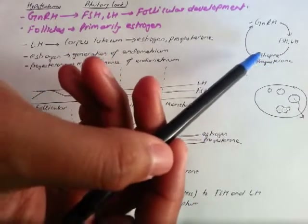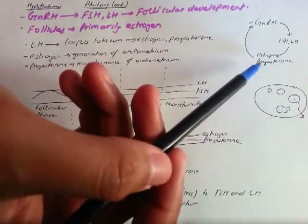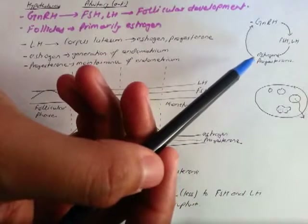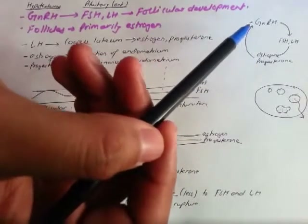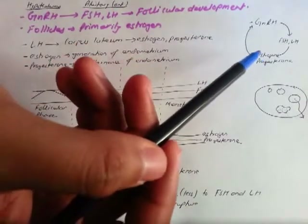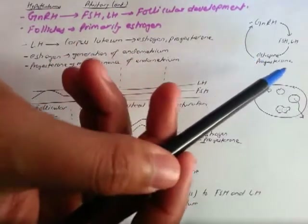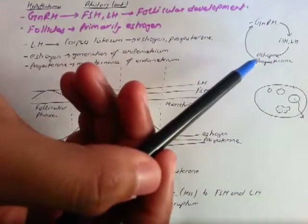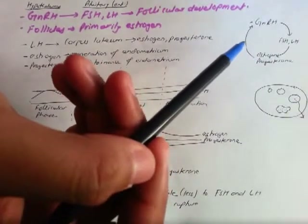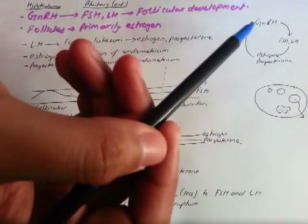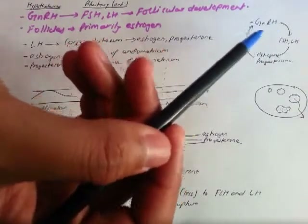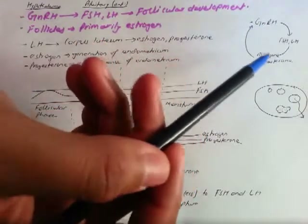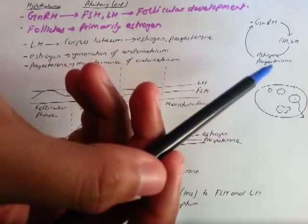We also have a negative feedback loop: after estrogen and progesterone are produced in high amounts, they actually have a negative impact on the production of GnRH. So they can control their own levels.